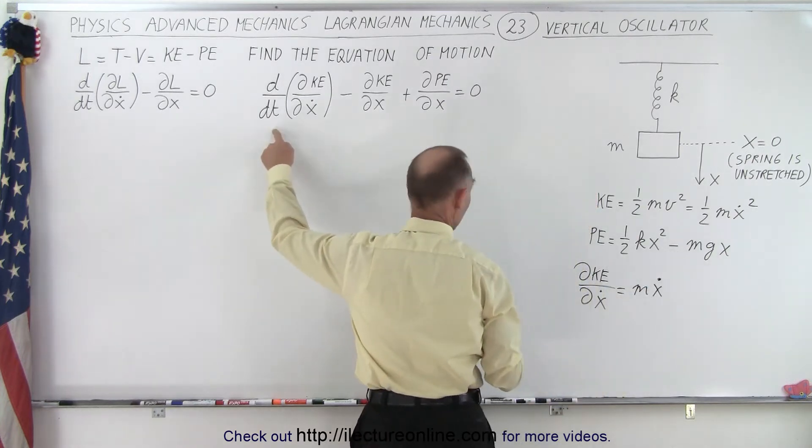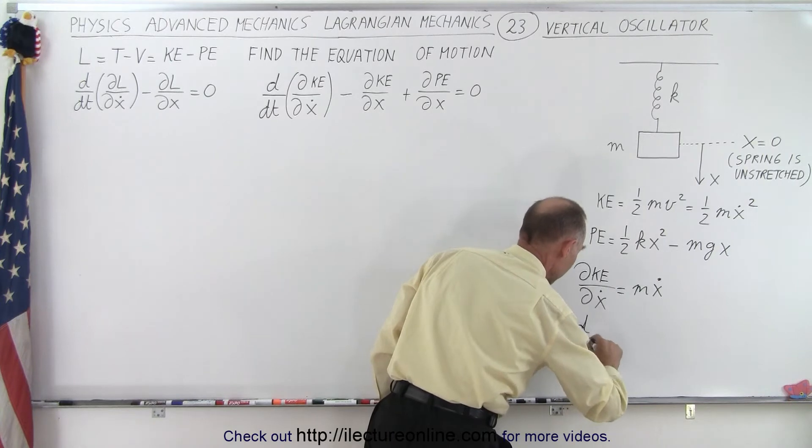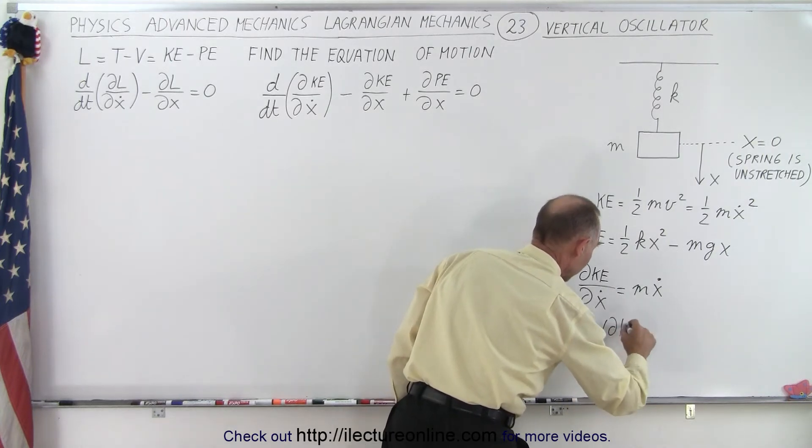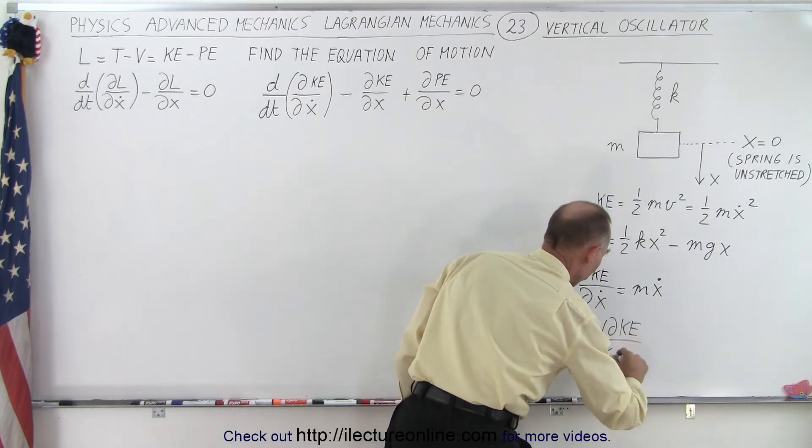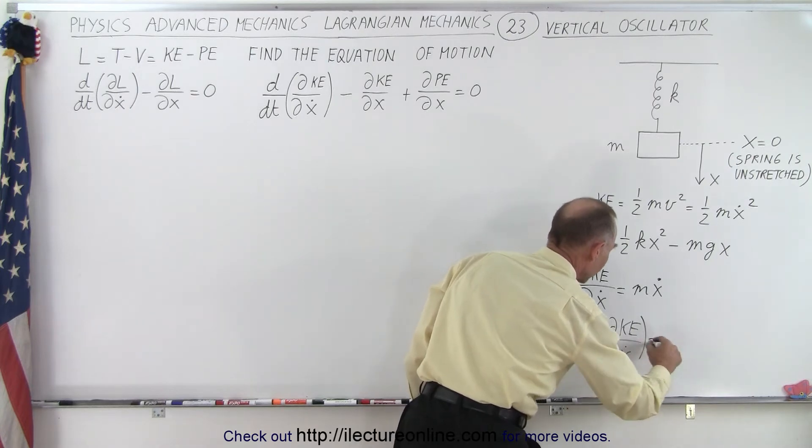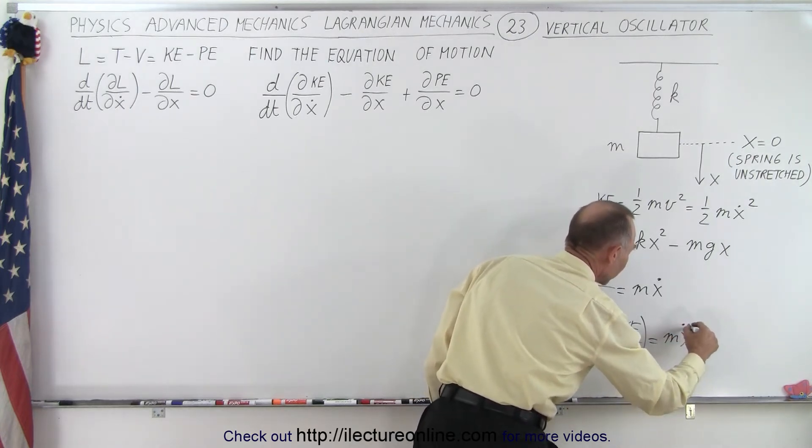Then if we take the time derivative of that, the d/dt of the partial of the kinetic energy with respect to x dot, that will therefore give us m x double dot.